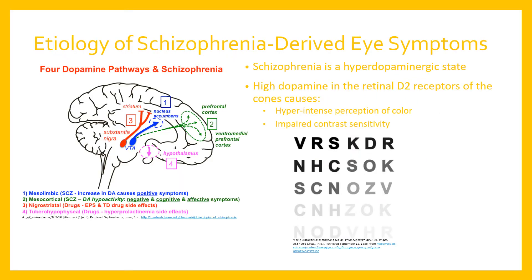Now that we've learned some of the anatomy of the eye, let's look at how schizophrenia is related to some of the eye abnormalities. We should note that schizophrenia is a hyper-dopaminergic state. In contrast, Parkinson's disease lacks dopamine — they are opposites — which means that sometimes when treating schizophrenia by depleting dopamine production, this can cause Parkinsonian symptoms, and vice versa. When there is a high level of dopamine, there are four dopamine-specific pathways in the brain. In schizophrenia, the mesolimbic pathway is elevated and saturated with dopamine, causing positive symptoms.